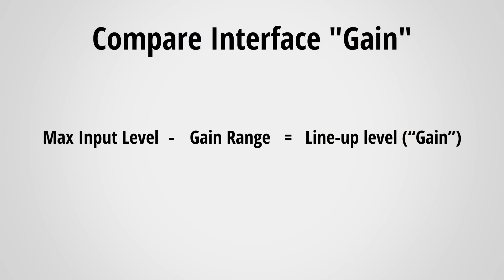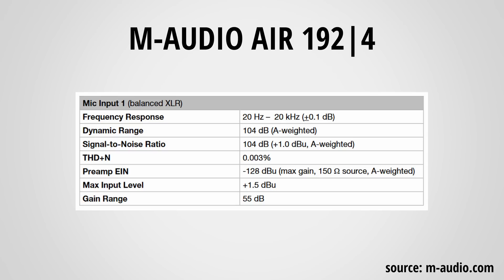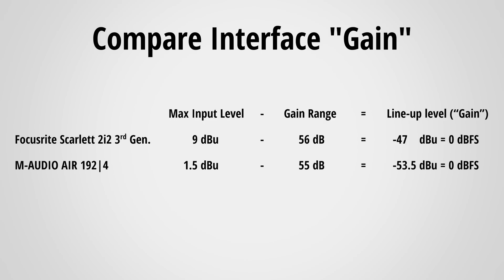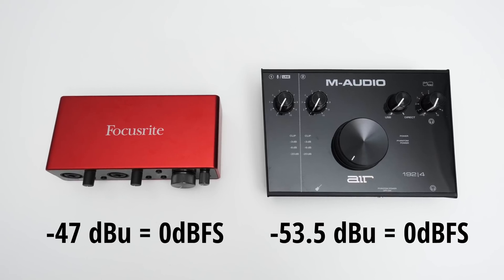Now that you know you need to include the full scale level in your calculation to directly compare interfaces, here's an easy formula. You take the maximum input level, subtract the gain range, and this gives you the lineup level. For example, the 2i2 has a maximum input level of 9 dBu and a gain range of 56dB, so 9 minus 56 equals minus 47. The Air 192 has a maximum input level of 1.5 dBu and a gain range of 55dB, so this comes out to minus 53.5. Note that the results are negative — the more negative the number, the more gain the interface has, because it can bring an even smaller analog signal up to full scale. So the Air 192 has about 6.5dB more gain compared to the 2i2.